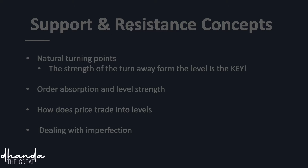Here are a few support and resistance concepts. First, support and resistance are natural turning points, and the strength of the turn away from the level is very important. You will hear me say many times during this course: how does the price trade into the level? Absorption is also very important — it indicates level strength. How many times has the market come back to a level, and what does that say about it? We also need to learn to deal with imperfection, because live price charts are not textbook setups.